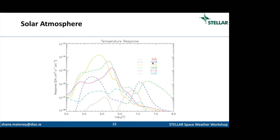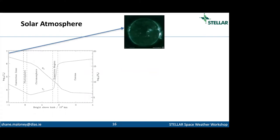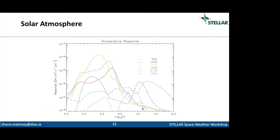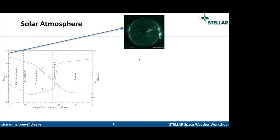The 131 angstrom channel is a good example — emission could be from very hot or relatively cooler plasma. That's one reason AIA is so useful: its multi-wavelength capability lets us use information from all wavelengths to disentangle whether emission is at a hot or cooler temperature. We can order the images by temperature rather than wavelength. So the hottest channel first — 131 angstroms — then going down in temperature through the solar atmosphere.